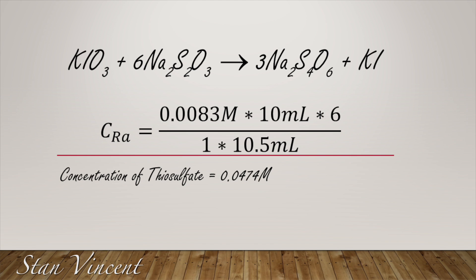I had tried to prepare a 0.05 molar solution of sodium thiosulfate. The actual concentration obtained from the experiment is 0.0474 molar, which is indicative of the fact that sodium thiosulfate is actually a secondary standard. That's how you do the calculation and obtain the molar concentration of a secondary standard by using a redox reaction.